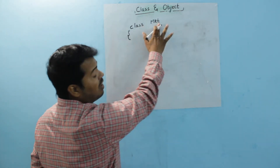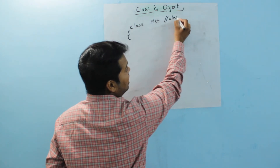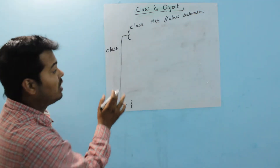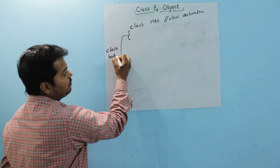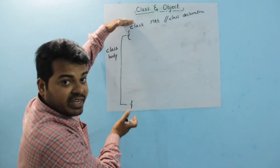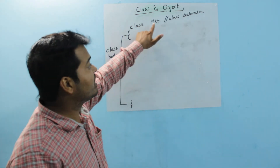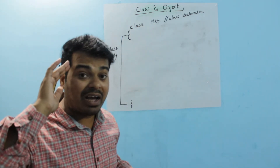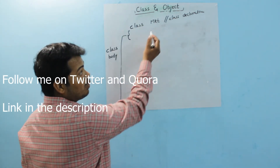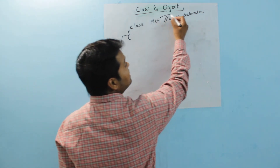This line is called your class declaration, and the opening and closing of the class is called the class body. This is the class MKT — the template you have created. You've given the name of the class as MKT; you can give any name. As I mentioned in my tokens video, the name given to any class is called an identifier. So MKT, the name of the class I've given, is called an identifier.